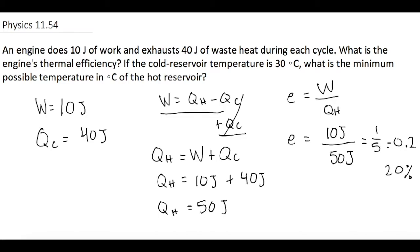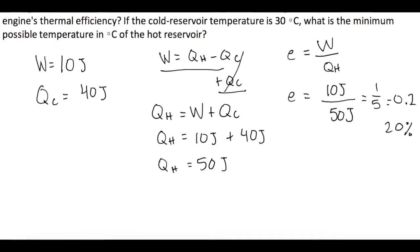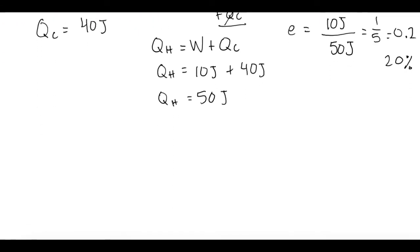Okay, so now let's go on to part B. So if the cold reservoir temperature is 30 degrees Celsius, what is the minimum possible temperature in degrees Celsius of the hot reservoir? What we're going to use is the theoretical maximum equation, so Emax is equal to 1 minus TC over TH.